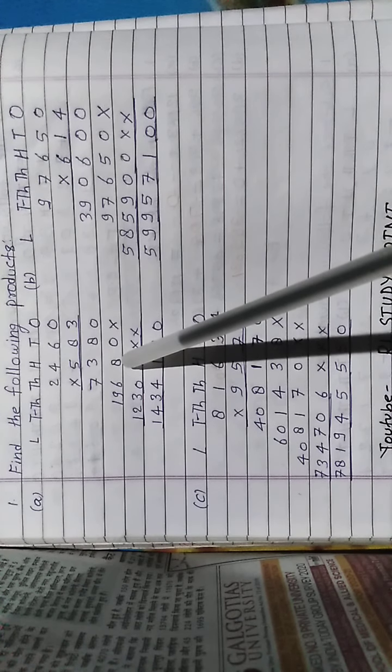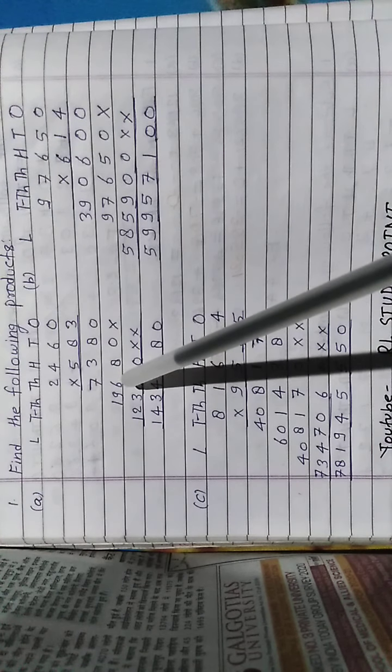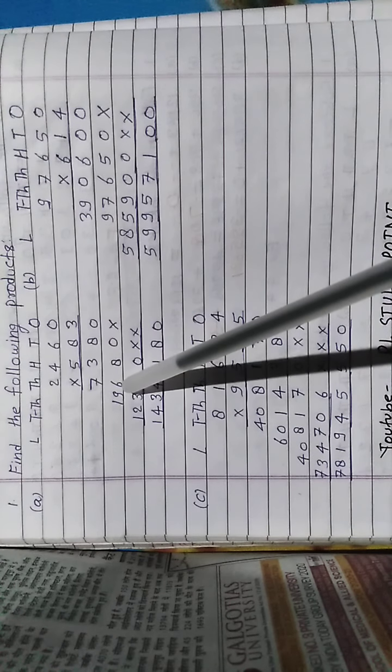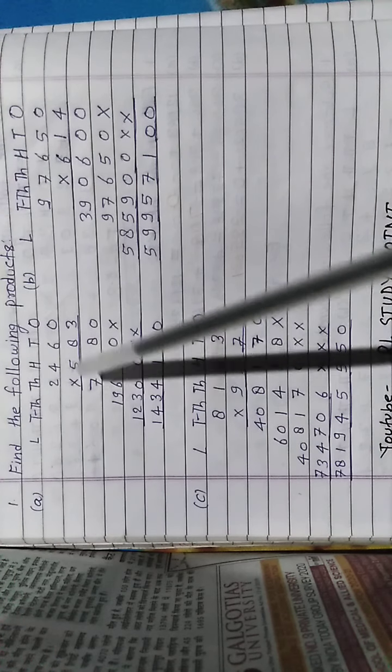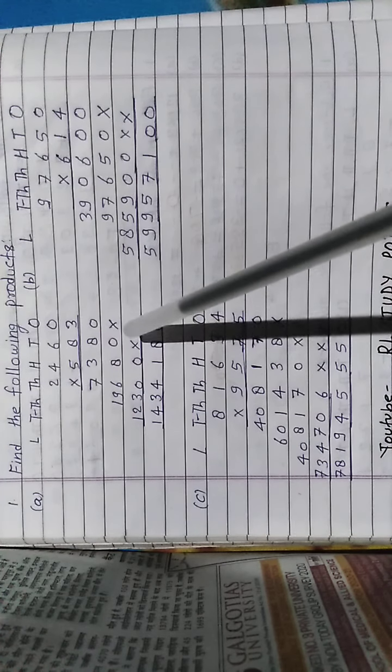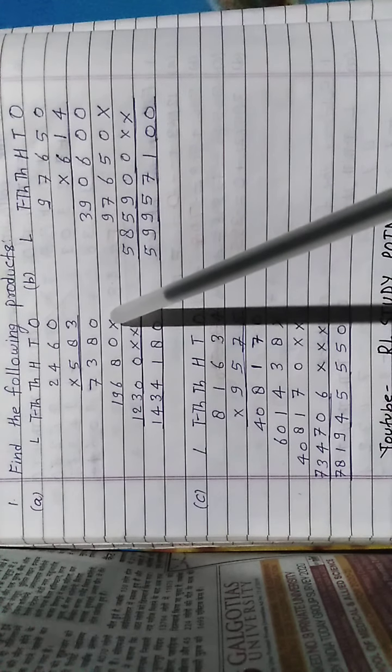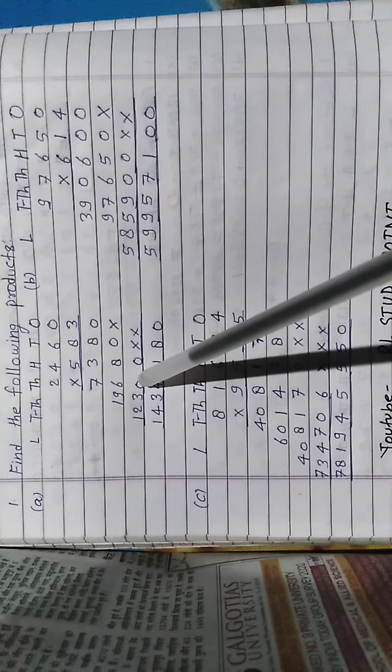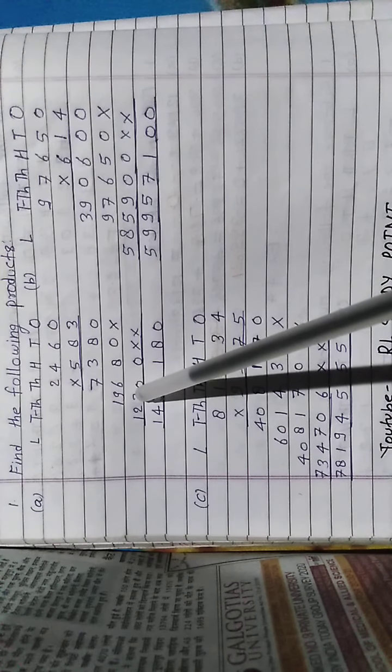Now here cross multiplication sign, that's 8 times 0 is 0, 8 times 6 is 48, 8 carry 4. 8 times 4 is 32 and 4 is 36 carry 3. 8 times 2 is 16 and 3 is 19. Now here multiplication sign, it means this first number, this second number.